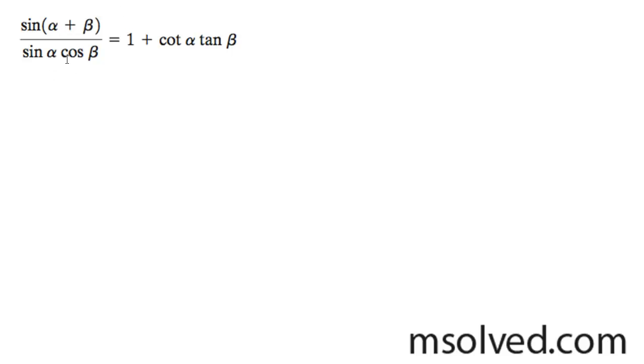Prove the left is equal to the right. I'm going to start off with the numerator on the left side, so I'm going to get sine alpha cosine beta plus sine beta cosine alpha.